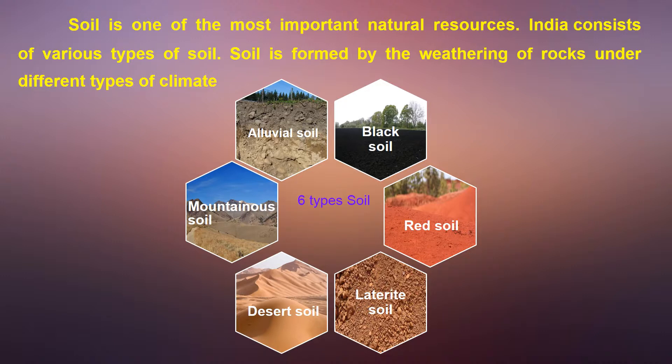The soil of India can be classified into six main types: Alluvial Soil, Black Soil, Red Soil, Laterite Soil, Desert Soil, and Mountainous Soil.